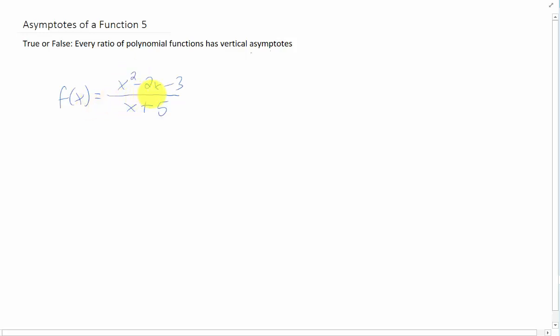So this right here is a ratio of polynomial functions. This does have a vertical asymptote. So it's a fair question. A lot of ratios of polynomial functions do have vertical asymptotes.